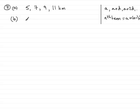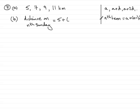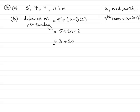We're asked to find an expression for the distance she runs on the nth Sunday. The distance on the nth Sunday will be equal to a — the first term, which is five — plus n minus one times the common difference, which is two. Expanding the bracket gives five plus two n minus two, and five minus two is three, so that's three plus two n, or equivalently two n plus three.